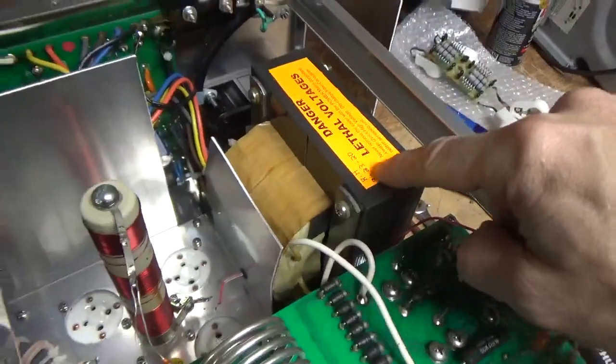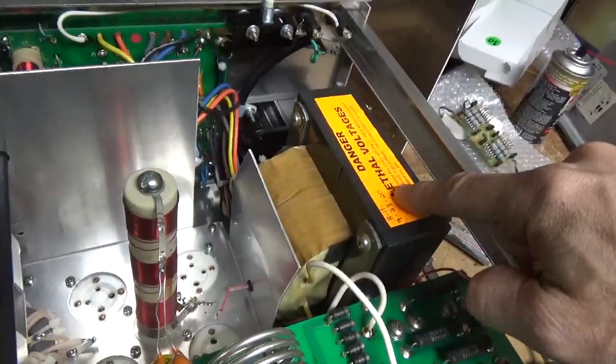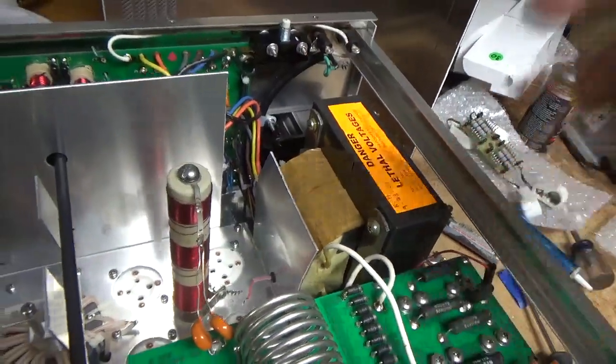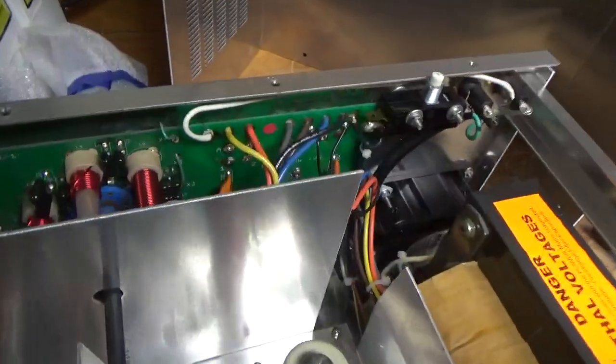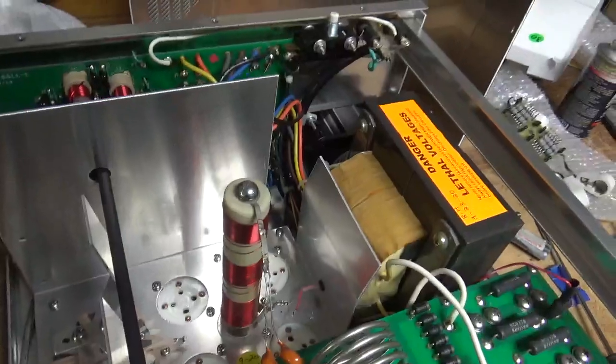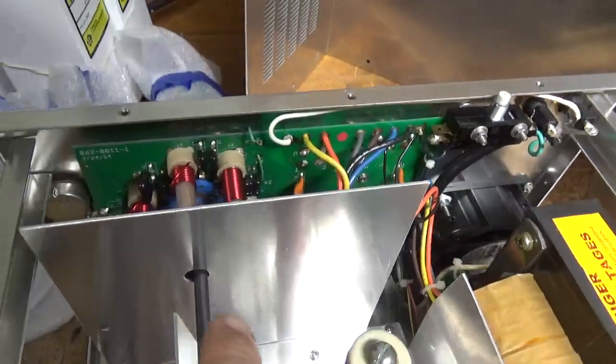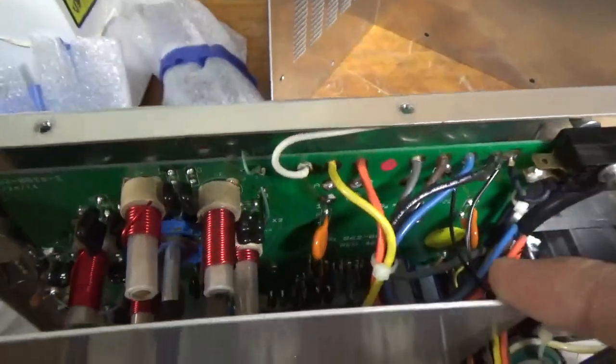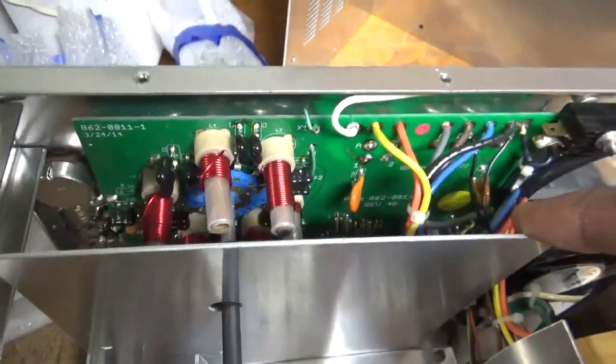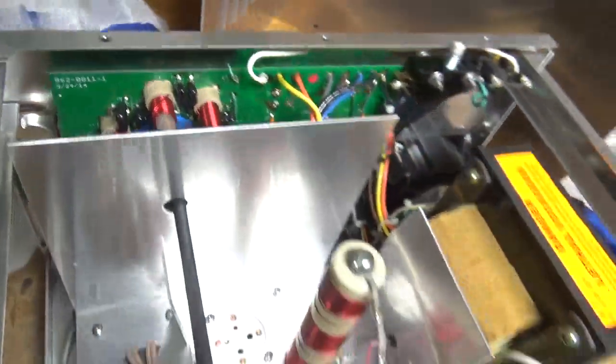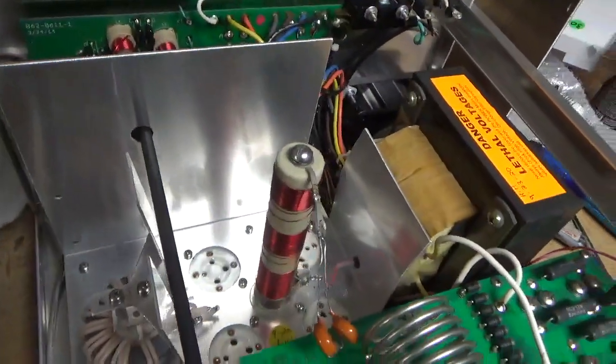This one was made in 2020. So newer ones tend to have more quality control issues. I'll take the gas discharge tube off the board along with the metal oxide varistor on the board. I can see it down there. I'm going to change the SO239s.